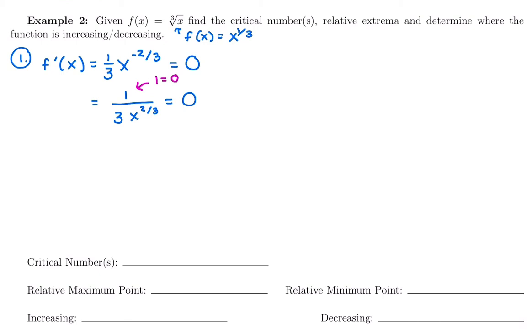Well, the numerator is just a 1, and so 1 is always 1. You can't make that 0. Then if we think about what makes the denominator 0, we have 3 times something has to equal 0. We could divide by 3 and solve it that way. Or we could just think 3 times something is 0. That something must be 0.